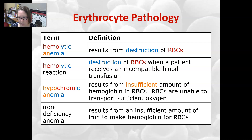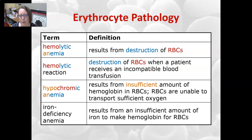Iron deficiency anemia is an anemia that results from an insufficient amount of iron to make hemoglobin for the red cells. This would also be a hypochromic anemia because without enough iron you don't have enough hemoglobin, and so the cells will look pale.